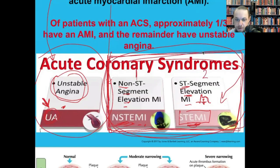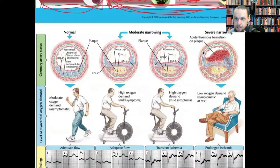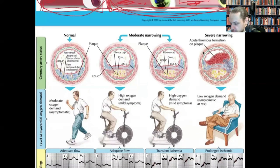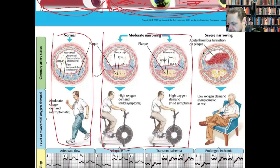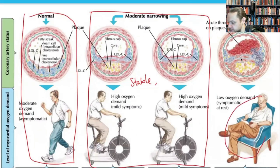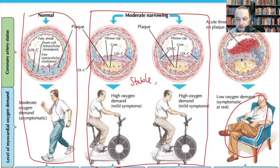With NSTEMI or STEMI — numbers one and two — the patient is definitely having a heart attack. With unstable angina they are not yet having a heart attack. To illustrate: a normal person has no narrowing and can exercise. Moderate narrowing leads to stable angina — chest pain with exertion that resolves with rest. Severe narrowing means the person sitting reading a book can develop chest pain at rest, which is indicative of unstable angina.